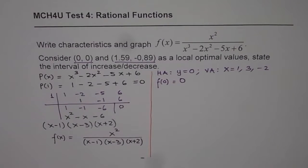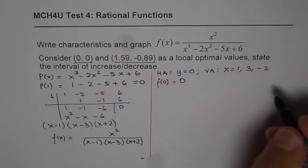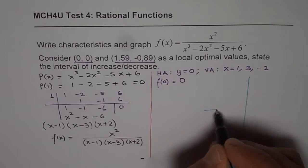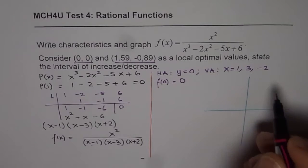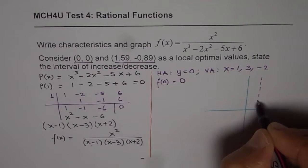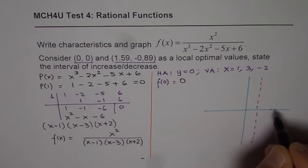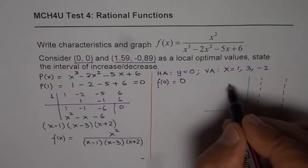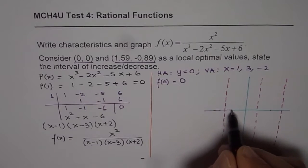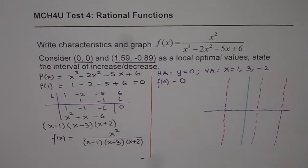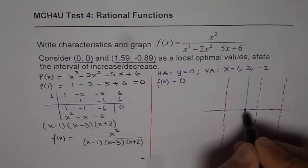Now let us graph this function. The vertical asymptotes are at x equals 1, x equals 3, and x equals minus 2. The horizontal asymptote is the x-axis itself. The graph will also pass through the origin (0, 0).